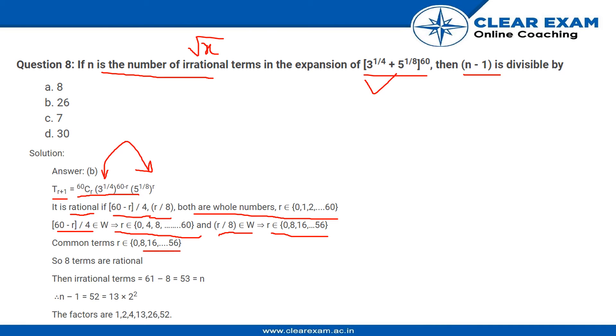We have 8 terms in common: 0, 8, 16, ..., 56. So there are 8 rational terms. Since there are 61 total terms, 61 - 8 = 53 irrational terms.